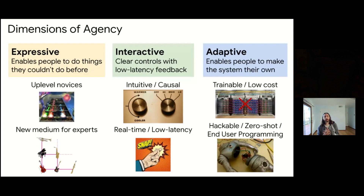When designing algorithms, we think about how to make them low-latency with clear, intuitive causal controls. The goal is to make things people can actually learn to use — you need quick feedback loops and intuitive causal effects. Machine learning models are adaptive by definition because you can provide them new data and they will adapt, but they often require training on really large servers, costing a lot of money with a large environmental impact. So the question is how can we design models from the get-go that are more hackable and require less data — a zero-shot end-user programming paradigm.